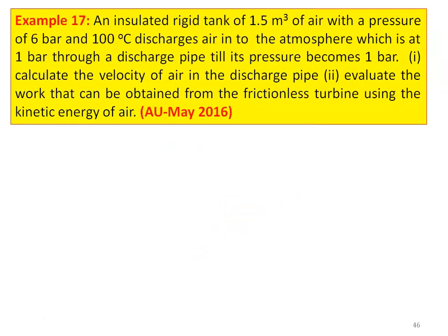Example number 17: An insulated rigid tank of 1.5 meter cube of air with a pressure of 6 bar and 600 degree Celsius discharges air into the atmosphere which is at 1 bar through a discharge pipe till the pressure becomes 1 bar. Calculate the velocity of the air in the discharge pipe, and evaluate the work that can be obtained from a frictionless turbine using the kinetic energy of the gas. We have a tank filled with air with volume 1.5 meter cube.